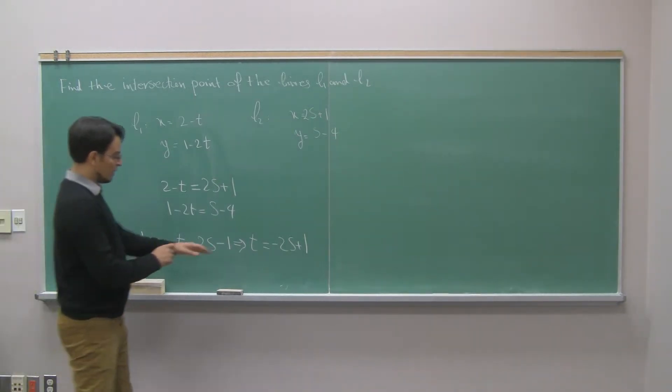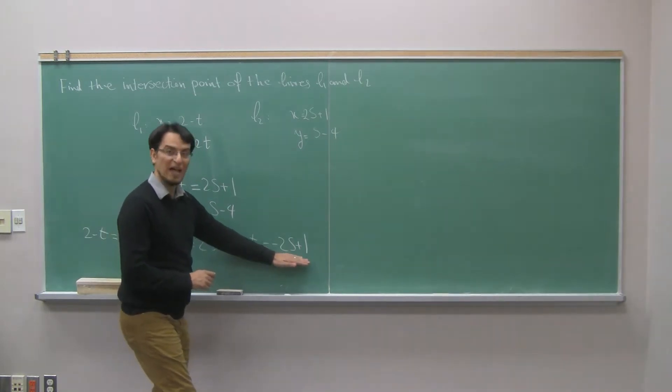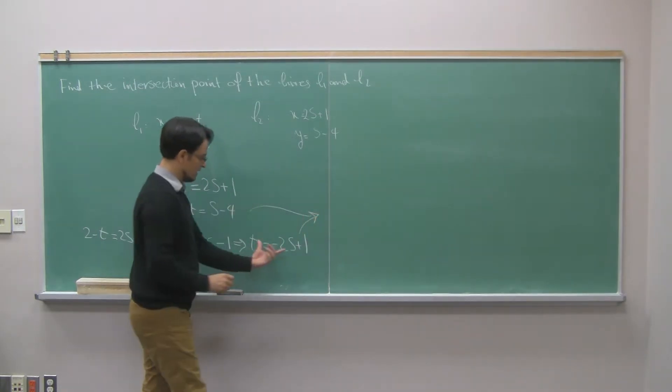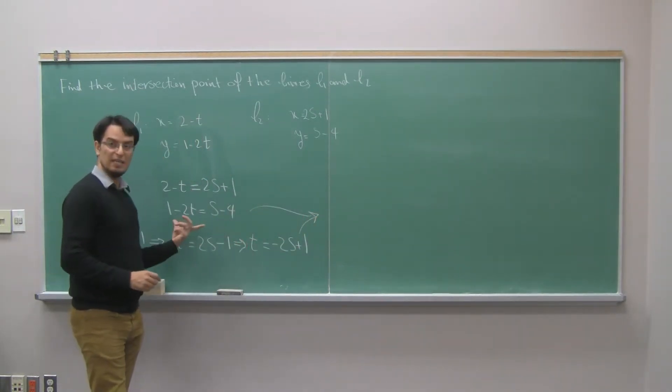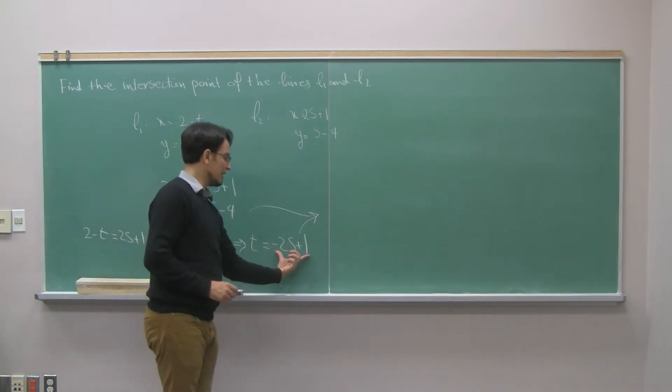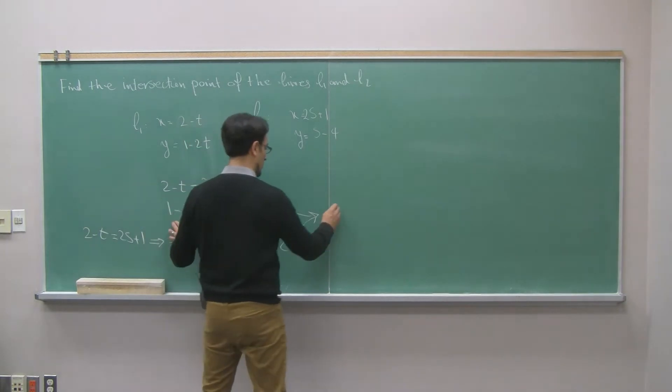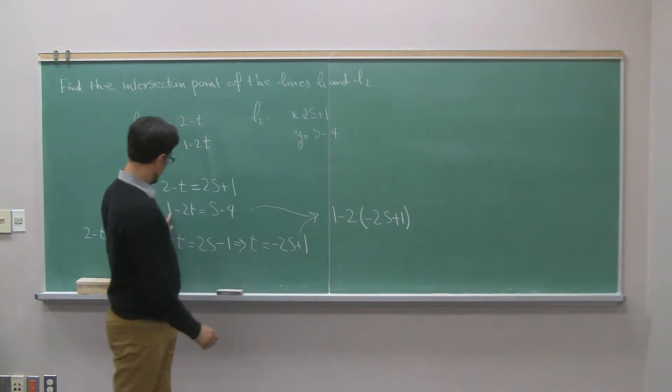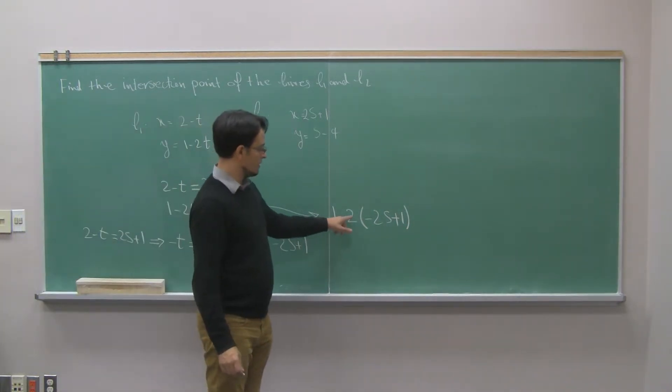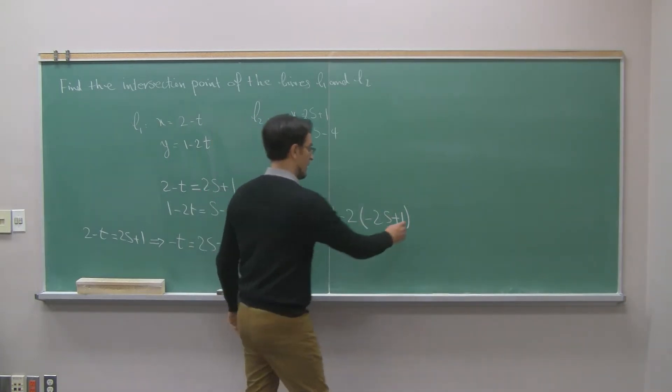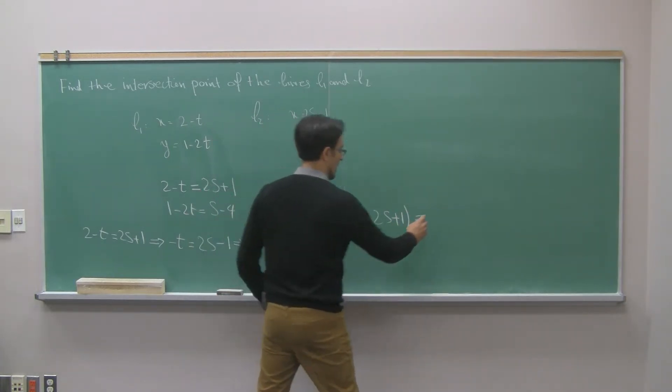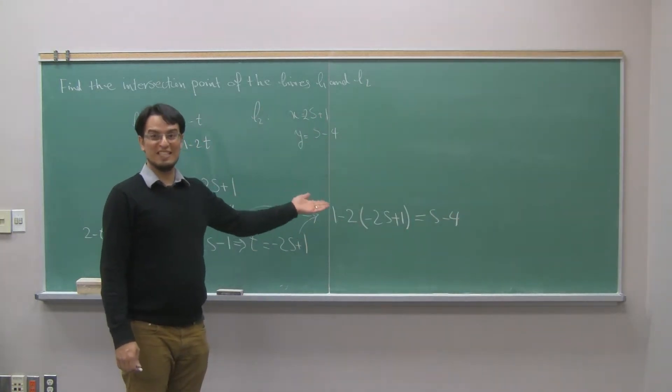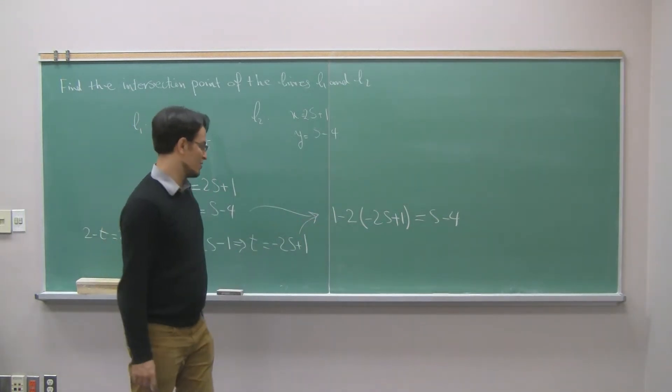Then the second step is to plug in this value into the second equation. So if I have these two together, meaning wherever I see t in this equation, I will plug in negative 2s plus 1. So I will have 1 minus 2 times negative 2s plus 1, and it is equal to 2s minus 4. Well now I have an equation in terms of s, and I have to solve it.